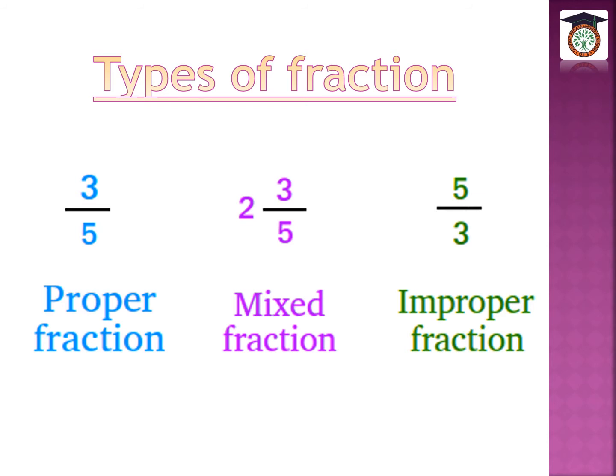The second type is improper fraction. It means the numerator is bigger than the denominator. Like 5 over 3 or 9 over 2 — the big number is on top and the small number is on the bottom.